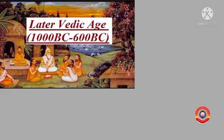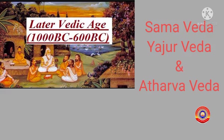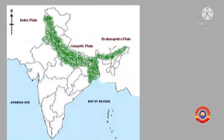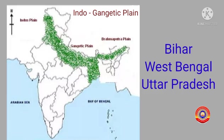The Later Vedic period is the period during which human life as depicted in the Samaveda, Yajurveda, and the Atharva Veda existed. The Aryans, who had been cattle rearers in the Rig Vedic period, reached the Gangetic Plain in the Later Vedic period. The Gangetic Valley is the area surrounding the river Ganga, including Bihar, West Bengal, and Uttar Pradesh.